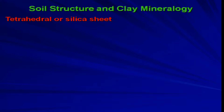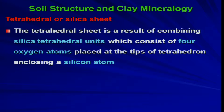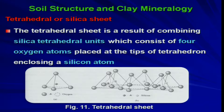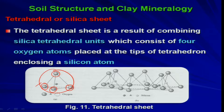The tetrahedral sheet is a result of combining silica tetrahedral units, which consist of four oxygen atoms placed at the tips of a tetrahedron enclosing a silicon atom. This forms the basic unit of clay minerals known as the tetrahedral or silica sheet. In the figure, you can see four oxygen atoms at the tips with one silicon atom inside, and these units are stacked together to form the tetrahedral sheet.